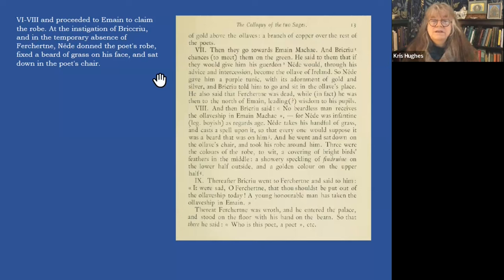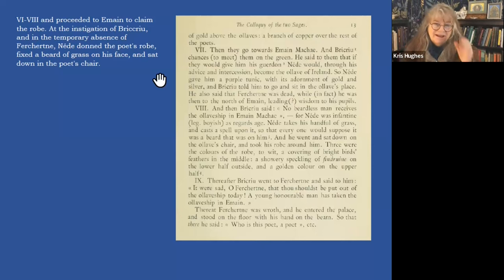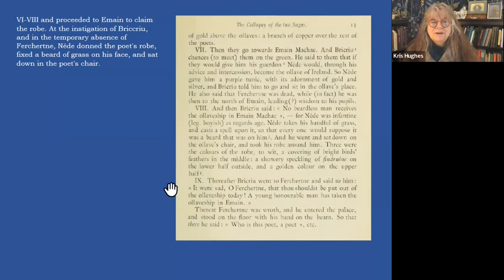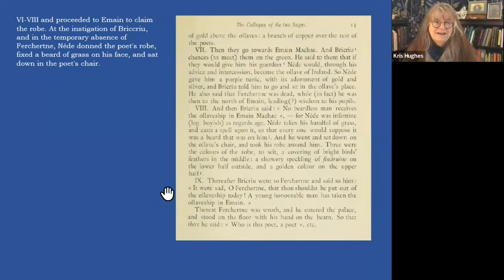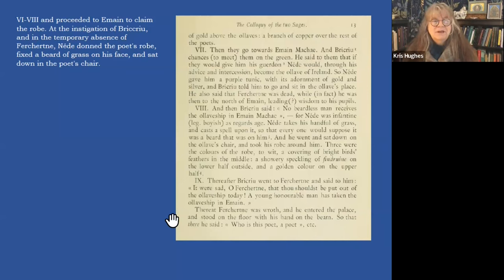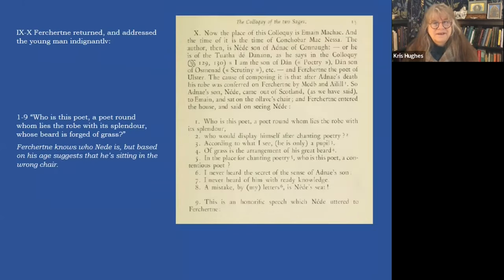They go on to Awen and Brikru tricks Nidha. He tells him that Fairkertne is dead — actually Fairkertne is just out of town — so Nidha might as well take his robe, sit in his chair, and take his father's place. Of course Fairkertne comes back. Brikru, who's always stirring up trouble, goes to him and says it were sad that thou shouldest be put out of the olive-ship of Ireland today — a young honorable man has taken the olive-ship in Awen. Thereat Fairkertne was rough, and he entered the palace and stood on the floor with his hand on the beam, saying 'Who is this poet?' — and so we're just about to get to the actual dialogue.